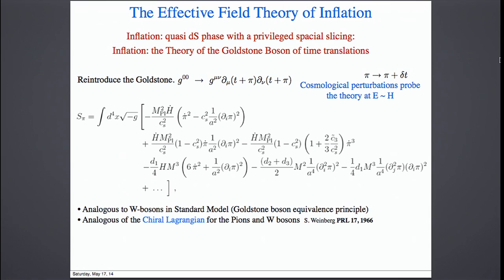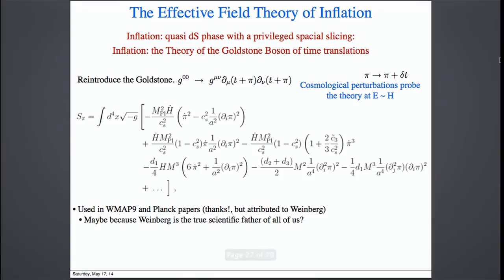One is left with this action, which is quite simple — analogous to the W-boson in the standard model, or as one might say, it reminds one of the chiral Lagrangian for the pion and the double boson. This Lagrangian is by now quite well established to study the phenomenology of inflation. In fact, it has been used already by WMAP9 and Planck to study inflation, even though they attributed it to Weinberg. Weinberg is the scientific father of all of us, so it's okay.